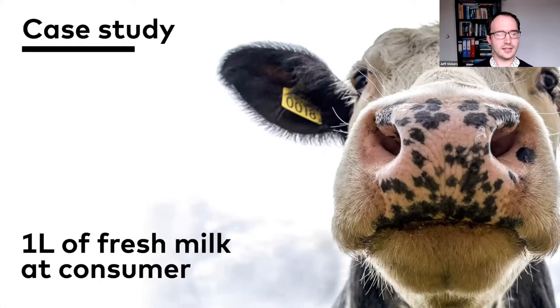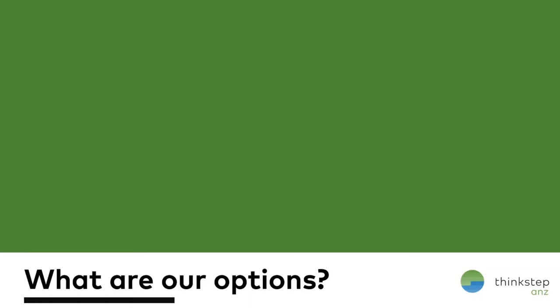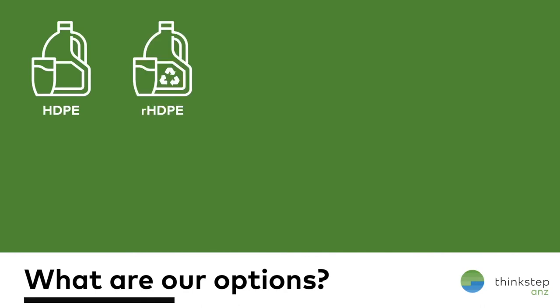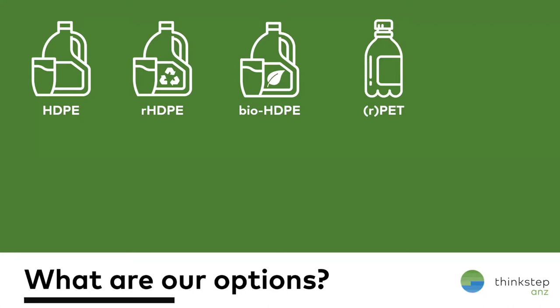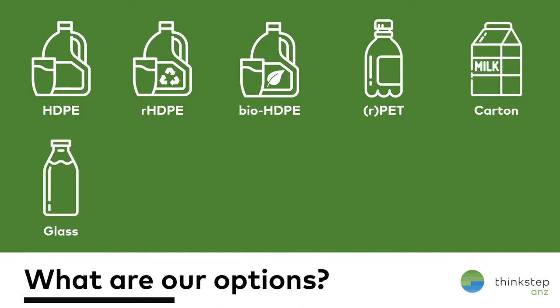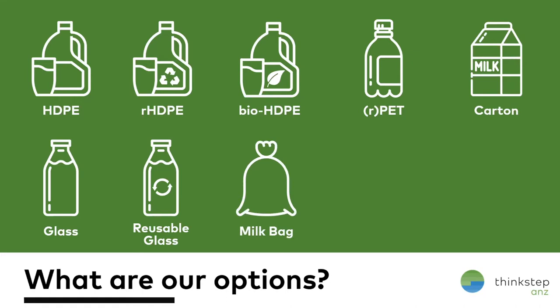Now I want to look at a case study of one litre of fresh milk at the consumer. There are lots of different ways to deliver that milk — an HDPE bottle as is common in Australia and New Zealand, recycled HDPE, bio HDPE, PET, recycled PET, a carton, single use glass, reusable glass, or even a bag. In Canada they often use milk bags inside a little jug with a piercing spout — quite a lightweight way of transporting milk. Or we could do something completely off the wall and teleport the milk, or my personal favourite: have a cow at home.